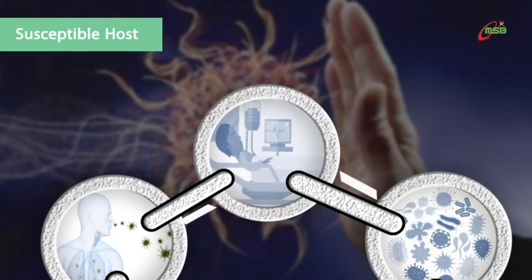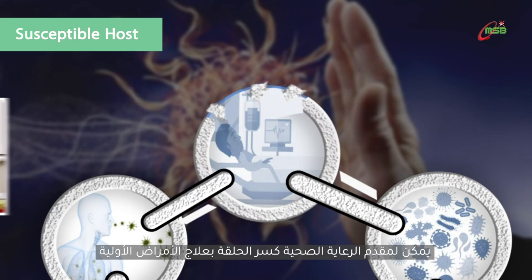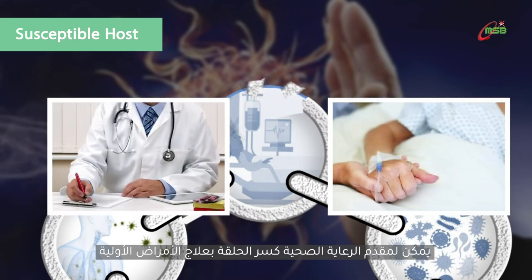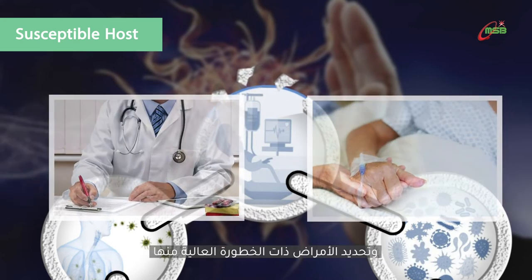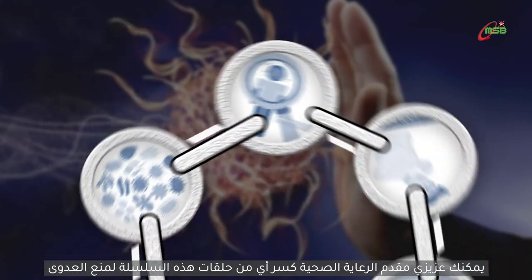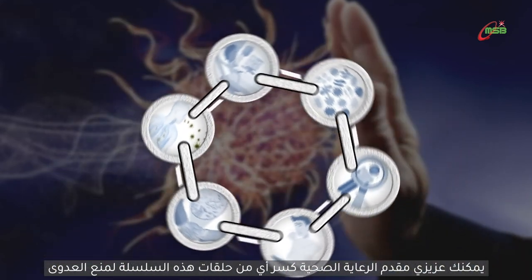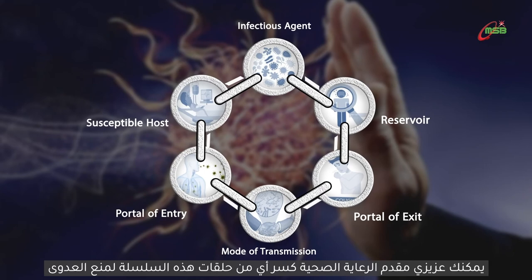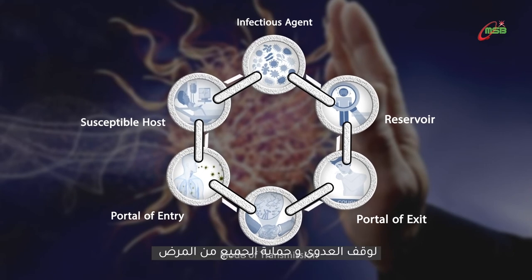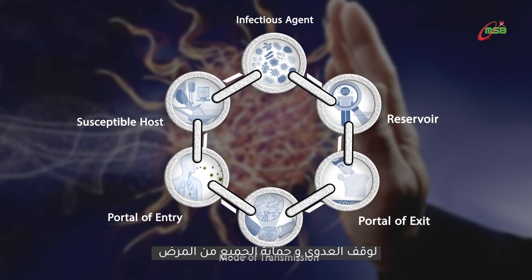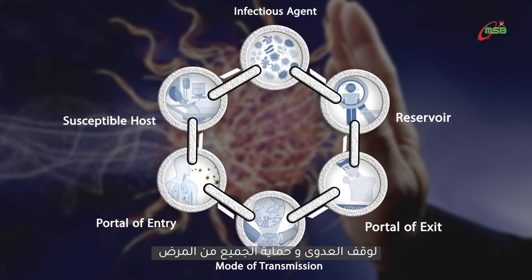The last link in the chain of infection is the susceptible host. Healthcare workers can break this link by treating the primary diseases and identifying those at higher risk of infection. As a healthcare worker, you can break any of these links so that infections will not occur, and your daily duties give you many chances to break the chain and keep everyone safe from illness.